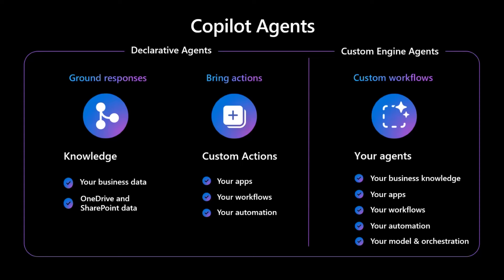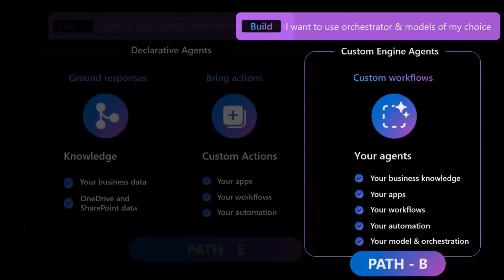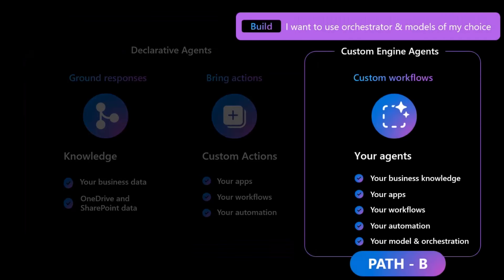Maybe you want complete control over your application. In the Copilot Camp labs, this is the E-path called 'extend,' where you'll extend Copilot with declarative agents. The other option — a whole other set of labs courtesy of Aisha — is called the 'build' path, where you build your own agents. Maybe you want to use your own orchestration code, your own large language model, or not take a dependency on Microsoft 365 Copilot and use something like Azure AI Studio instead. Then you can write your own agent. It will still appear in BizChat — that's been announced and should be visible later this calendar year.